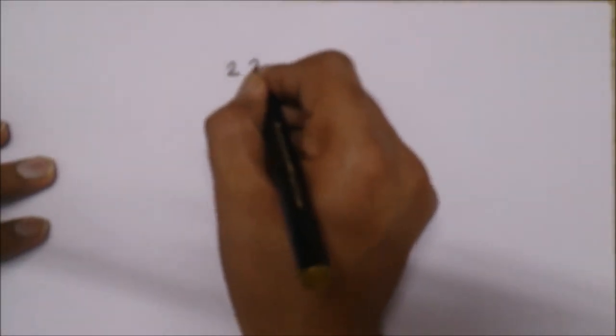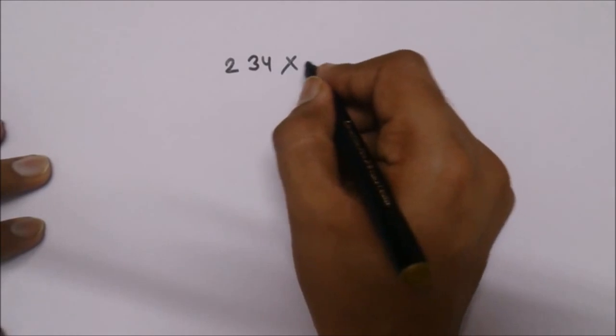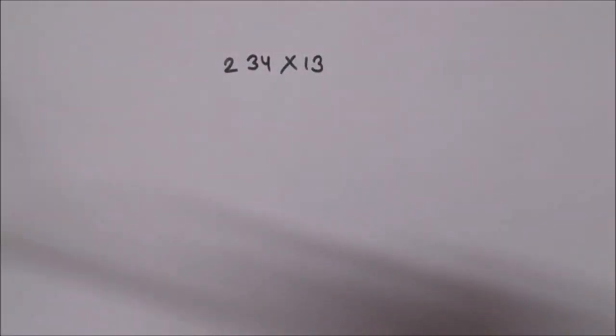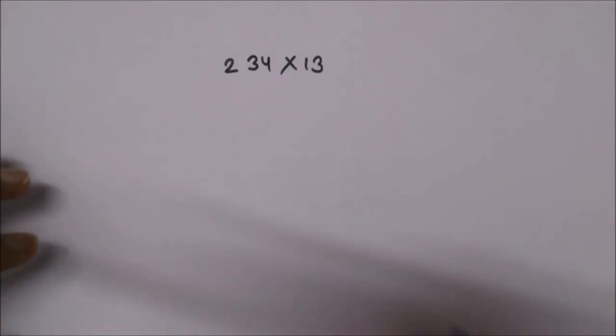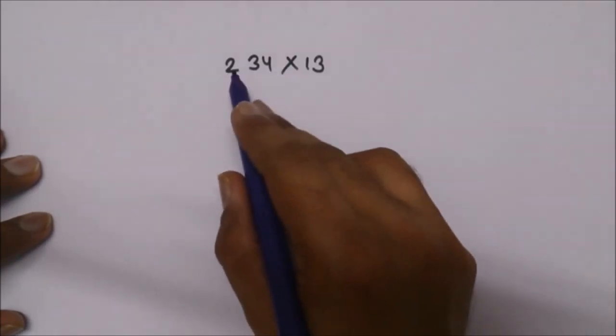Let's take another example to make it more clear. Let's take two numbers: 234 and 13. Let's see this multiplication with the same trick. Here 234 has three digits: 2, 3, and 4.